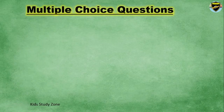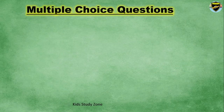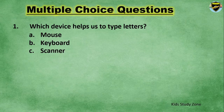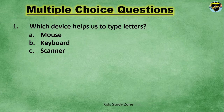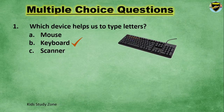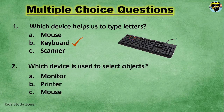Now it's time for multiple choice questions to see how much you understood. The first question is: which device helps us to type letters? Your options are mouse, keyboard, or scanner. You can write the answer in the comment box as well. The correct answer is keyboard. The second question is: which device is used to select objects?